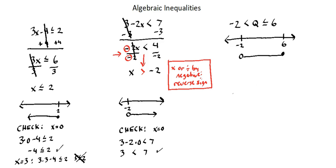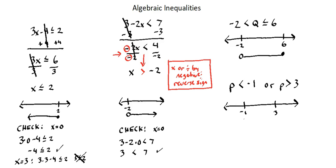And let's consider another scenario: p is less than negative 1, or p is greater than 3. We'll mark negative 1 and 3 on the number line. We'll represent p is less than negative 1 with an open circle — all values less than and excluding negative 1. And for p is greater than 3, open circle — all values excluding 3 and greater. So these are two additional representations of inequalities on the number line.